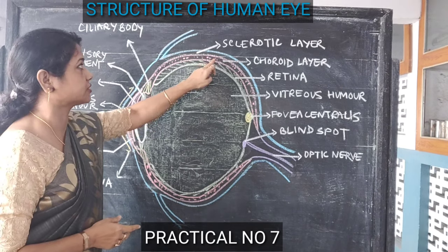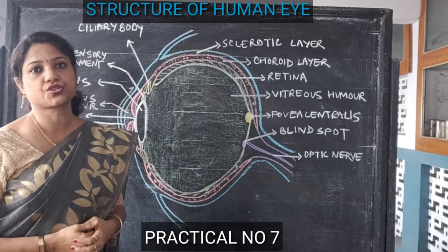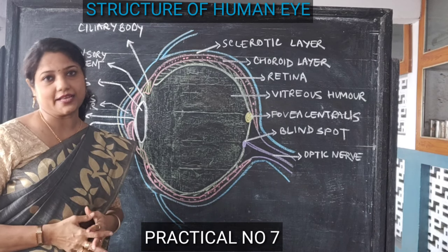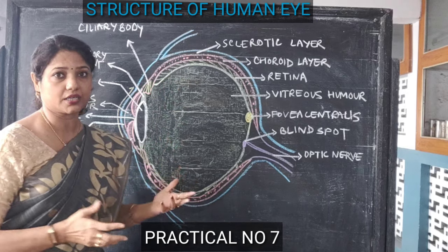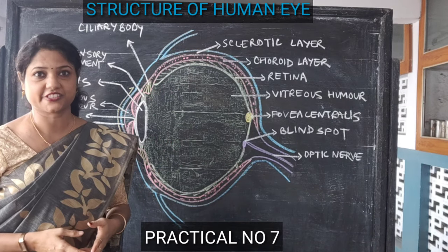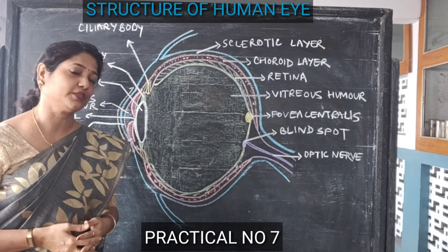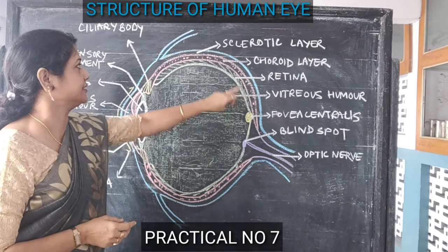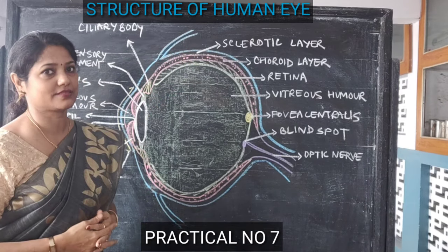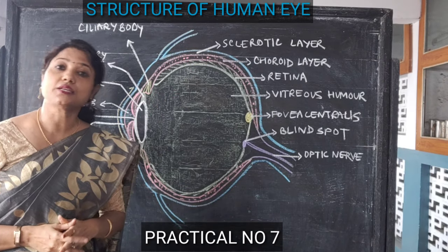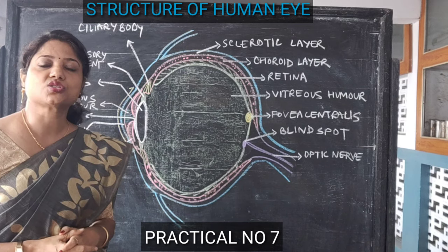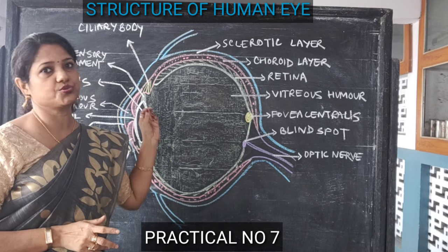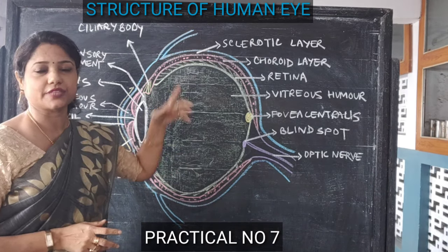The middle layer, which is called the choroid layer, is richly supplied with blood vessels. This layer actually supplies nutrients to the whole eye as it contains blood vessels, getting all its nutrients from the blood present in those vessels. This choroid also contains a pigment called melanin, which does not allow light to reflect inside the internal part of the eye.